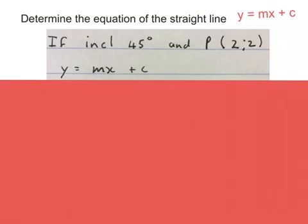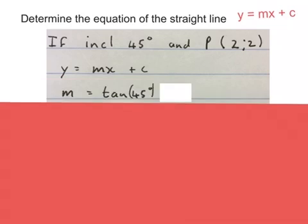The next one, they give me the inclination is 45 degrees and the point on the line is (2,2). We use the formula y equals mx plus c. Then we write m equals tan 45, push it into the calculator and we get the value m is 1. So I can substitute that in there.